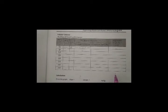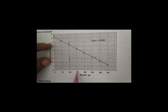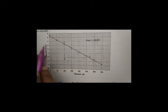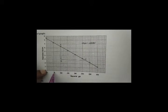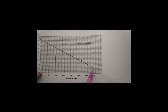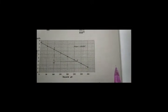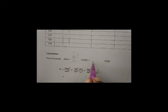Once the depression as a function of mass is determined, plot a graph of depression (y-axis) versus mass (x-axis) with values at 0, 50, 100, 200 g, etc. From this plot, find the slope as AB/BC, where AB is the change in depression and BC is the change in mass.